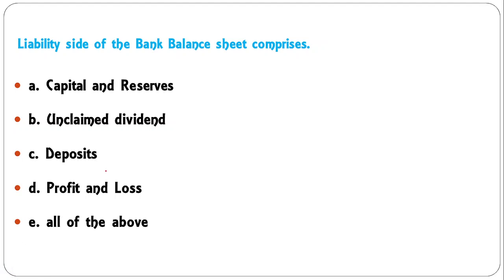The liability side of the bank balance sheet comprises: capital and reserves, unclaimed dividend, deposits, profit and loss, or all of the above? The bank's balance sheet includes all four of these items on the liability side — there are many more, but all of the above is the correct answer.